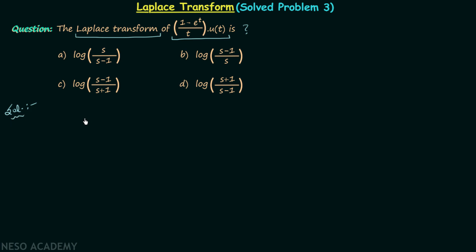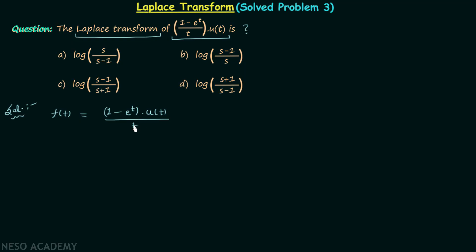We have a time domain signal. Let's say the time domain signal is f(t), and it is equal to (1 minus e^t) multiplied by the unit step signal u(t) in the numerator, and in the denominator we have t.